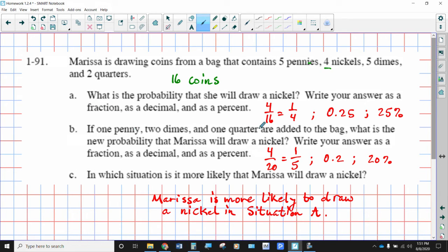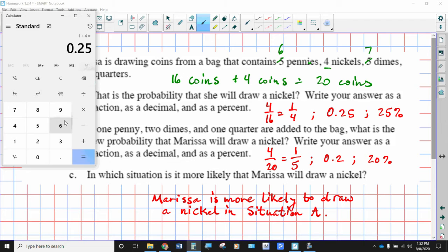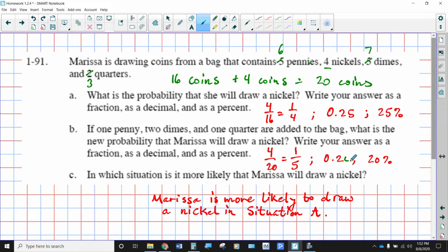If one penny, two dimes, and one quarter are added, that means you're adding 4 more coins for a total of 20 coins. One penny was added, so pennies are now 6. Two dimes have been added, so that's now 7. And one quarter has been added, so that's 3. What is the probability of drawing a nickel? The number of nickels hasn't changed, just the number of coins. So this is now 4 out of 20, which is simplified down to 1/5. If we want to convert 1/5 to its decimal form, we just do 1 divided by 5, which is 0.2. And 0.2 is the same as 0.20, which means 20%.